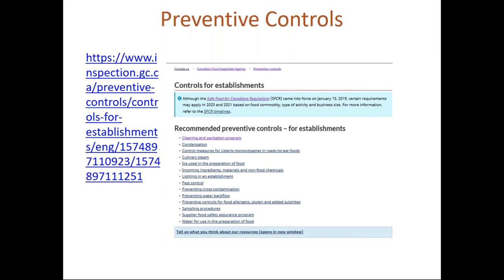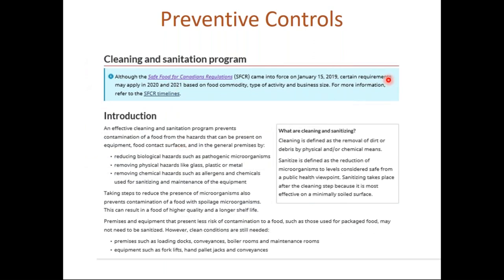I'm going to select the cleaning and sanitation program as an example. One thing to remember: the documents you create for your preventive control plan will be the documents you use to train your staff on how to follow the programs and procedures, and how you'll document that the procedures are followed. All of the examples on the CFIA website are explained the same way — with an introduction, what's included, what's not included, and the purpose.